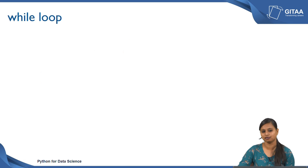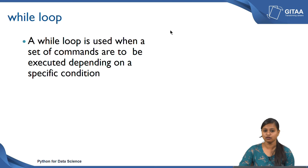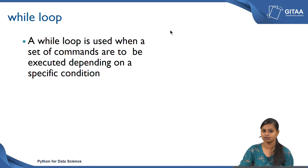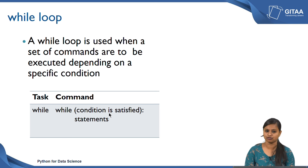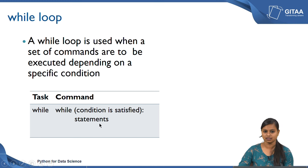Next we will see about the while loop. A while loop is used when a set of commands are to be executed depending on a specific condition — it will be executed as long as a condition is true. Whenever the condition becomes false, the while loop execution will stop. The command is: while, and inside the parentheses you give the condition. As long as that condition is true, the statements will get executed.